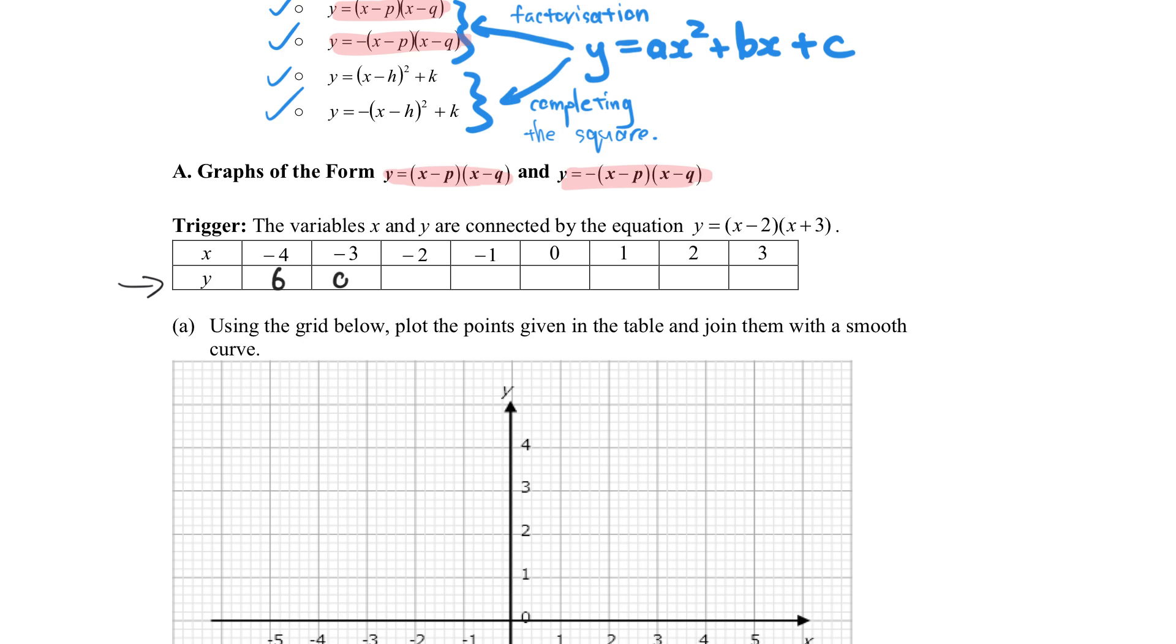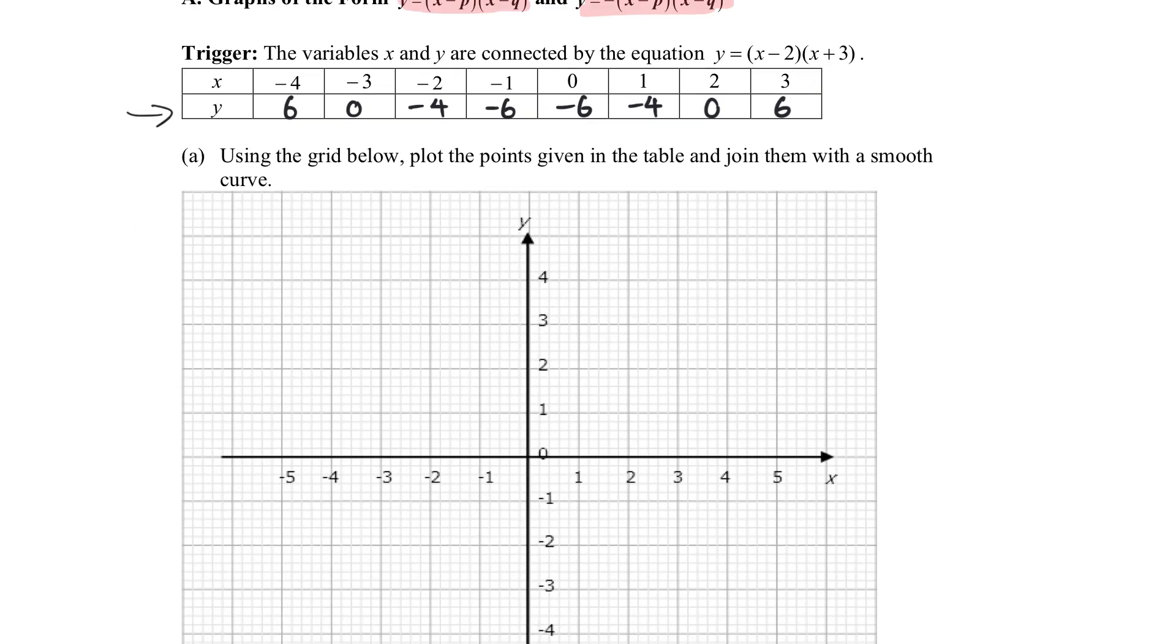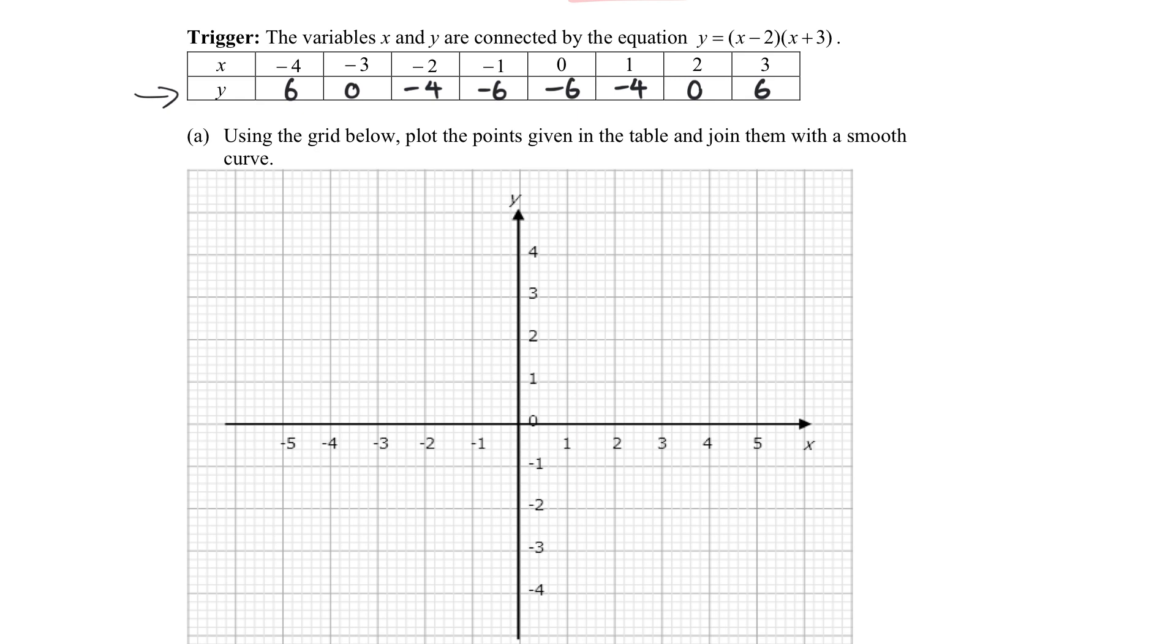Right, so the values are 6, 0, minus 4, minus 6, minus 6, minus 4, 0, and 6. Use your calculator to do this. So quickly plotting them out, we would have minus 4, 6 here, there should be an extension here, minus 3, 0 here, minus 2, minus 4 here, minus 1, minus 6 again, 0, minus 6, 1, minus 4, 2, 0, 3, and 6. Right, so plotting out, we will get this, so this is the graph of y equals x minus 2 multiplied by x plus 3, a quadratic function.